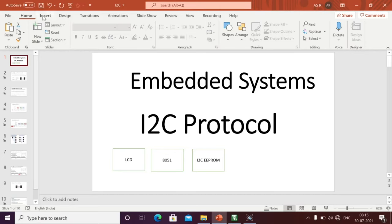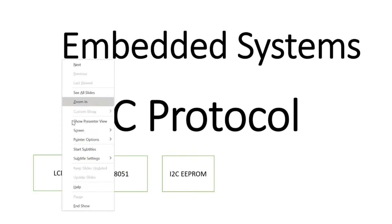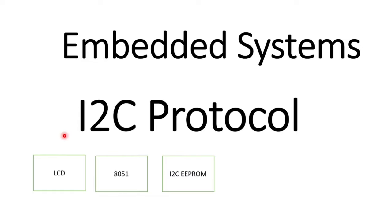Hi guys, if you are viewing my channel for the first time please subscribe for more updates on embedded systems. Today we are mainly discussing about I2C protocol with an example. We are going to take an 8051 microcontroller and an I2C EEPROM IC, establish communication between these two ICs using I2C protocol, store one character of data from the microcontroller to the EEPROM, retrieve that data, and display it on the LCD.